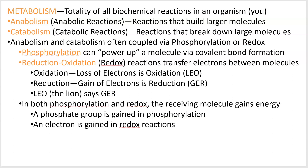Metabolism can be broken down into two categories: anabolic reactions, or anabolism, which build bigger molecules, and catabolic reactions, or catabolism, which break down those big molecules. For example, taking a large starch molecule and breaking it down into individual glucose monomers is a catabolic reaction. Taking a bunch of glucose and assembling them into a large starch molecule is an anabolic reaction.